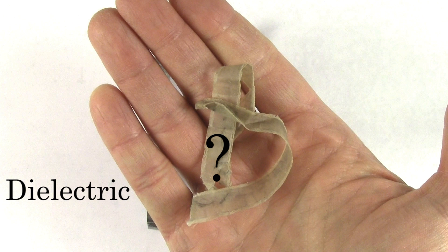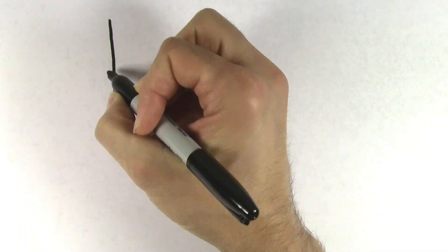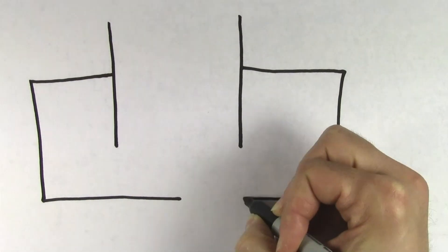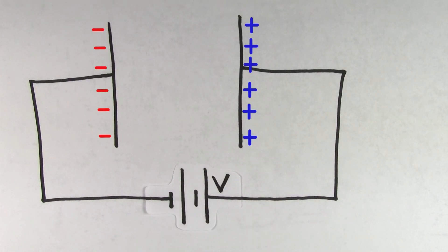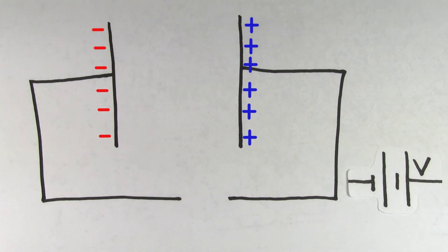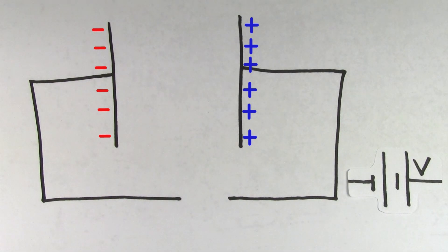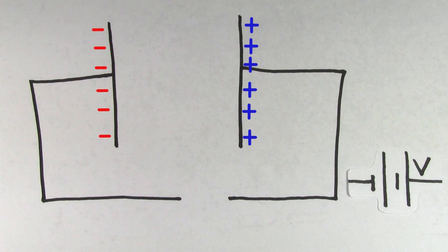But why does a dielectric increase the capacitance? To find out, let's look at this example. When you hook up a battery of voltage V to a capacitor, charge will get separated. Now let's say you remove the battery. The charge is stuck on the plates since the negatives don't have a path to get back to the positives.